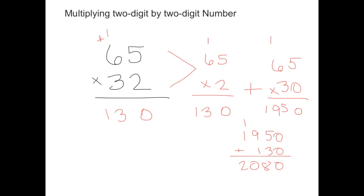The next step is going to be to multiply by the number in the tens place, which is a three. But in essence, we're multiplying by thirty, sixty-five times thirty, because the three is in the tens place.